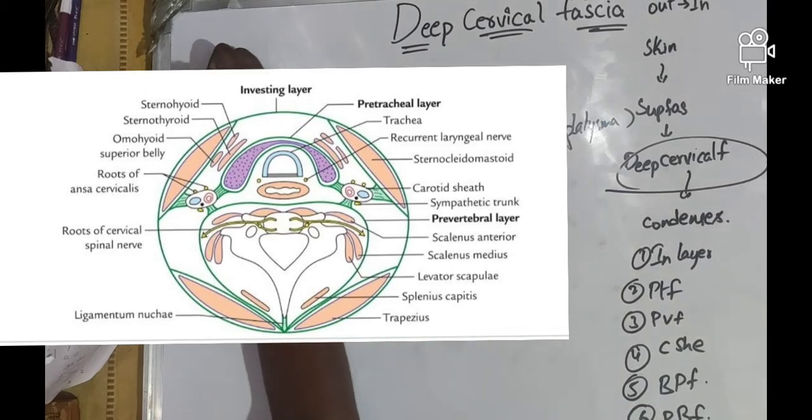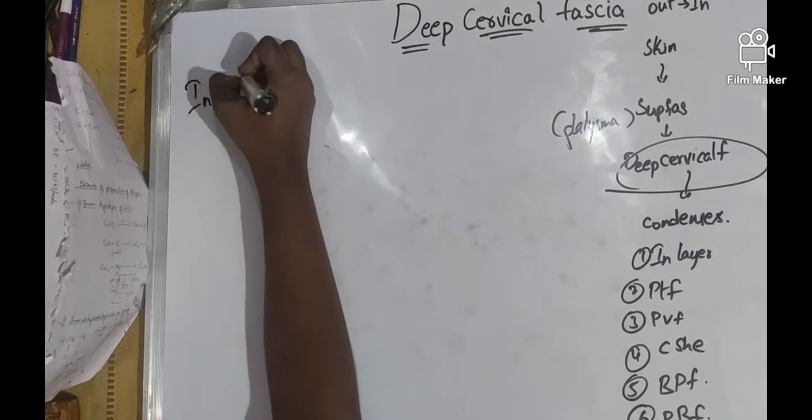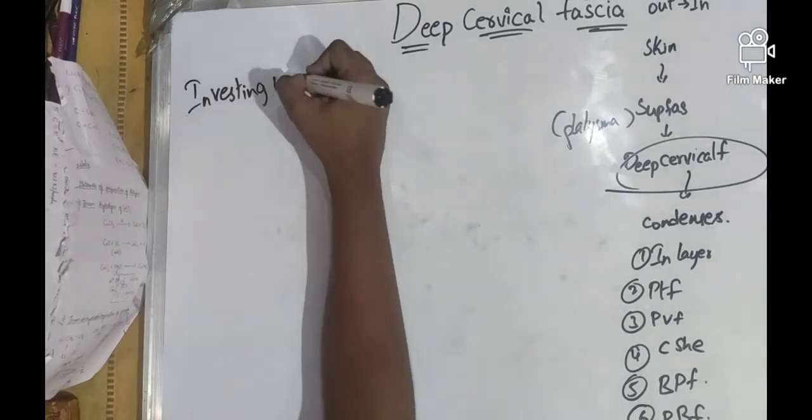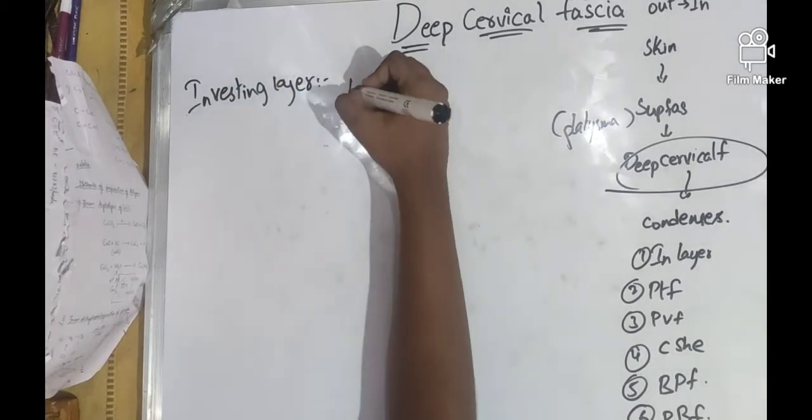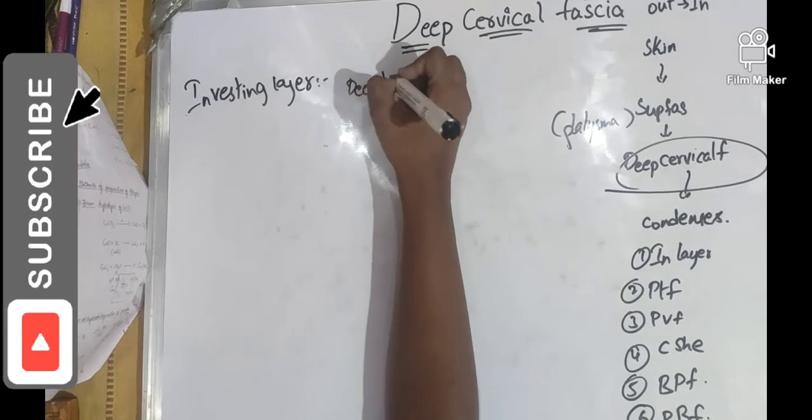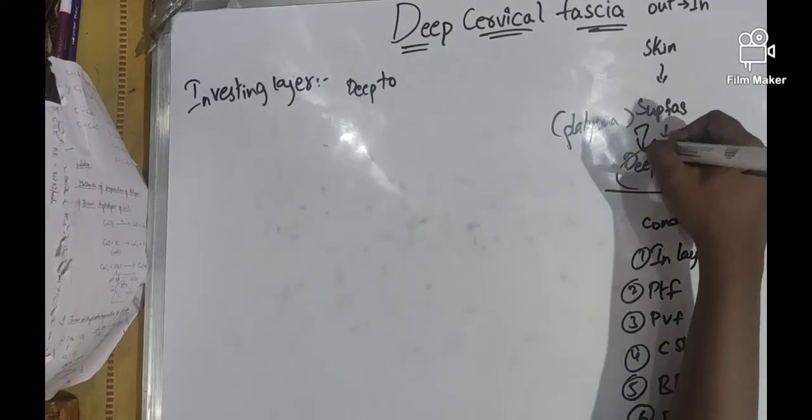First we are going to discuss the investing layer. The layer which is present deep to platysma is called the deep cervical fascia.